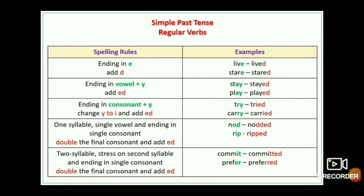Spelling rule three: words ending in consonant plus Y — change Y to I and add ED. See here, in this rule: 'try' — last letter is Y, but Y is before a consonant R. In this case, we replace Y with I-E-D. So try → tried: T-R-I-E-D. Because last letter is Y and Y is before a consonant, we remove Y and add I-E-D.